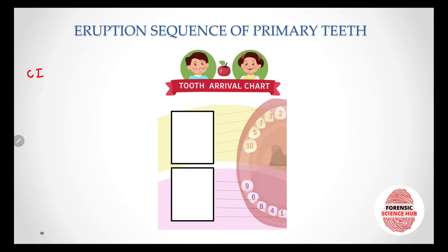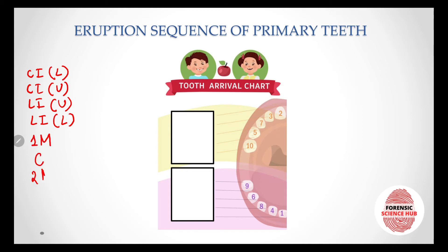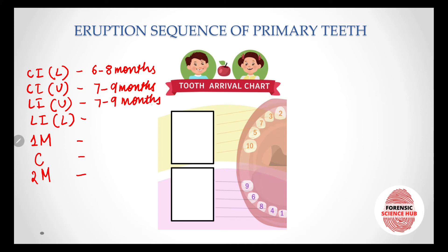Now let's talk about the eruption time of these teeth. Central incisors — the lower one — come between six to eight months. Central incisors in the upper jaw come between seven to nine months. Lateral incisors in the upper teeth come between the same time period, seven to nine months. Then the lateral incisors in the lower jaw come between 10 to 12 months. Then the first molar comes between 12 to 14 months.